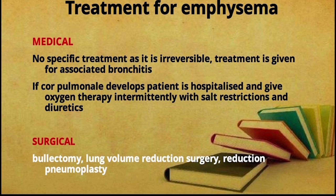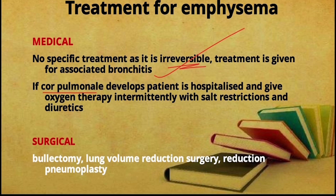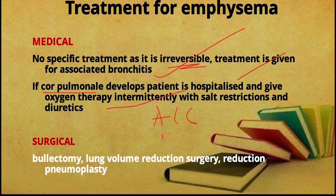For emphysema, there is no specific medical treatment because it is irreversible. Treatment is given for associated bronchitis. If cor pulmonale is present — right ventricular hypertrophy or right-sided heart failure due to lung disease — hospitalize and give intermittent oxygen therapy with salt restriction. If heart failure is present, give ACE inhibitors; if arrhythmia is present, give digoxin.